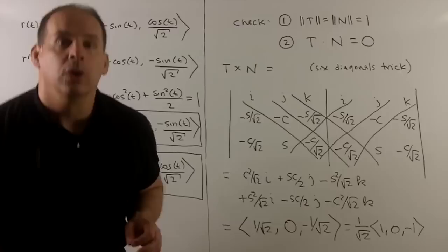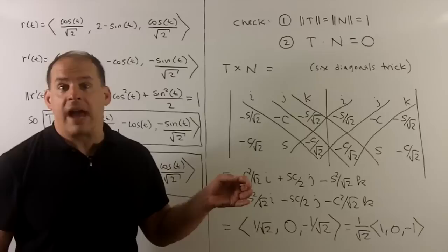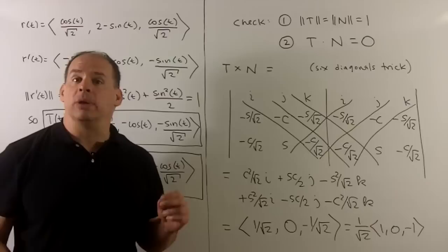Now if we're checking our work, the length of T and N both have to be equal to one - they're unit vectors. And we'll also want that if we take the dot product of T and N, we get zero. These vectors are going to be orthogonal to one another.